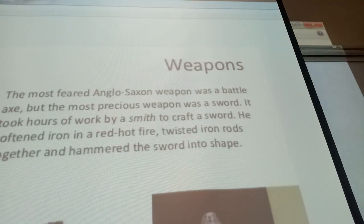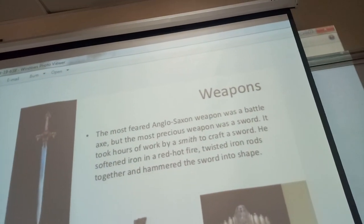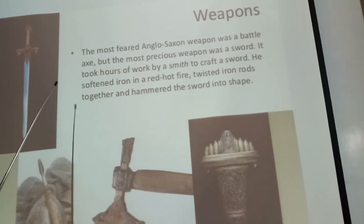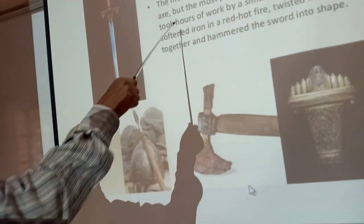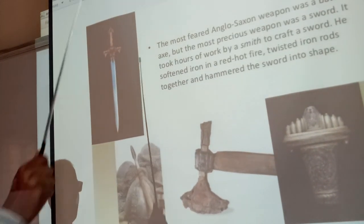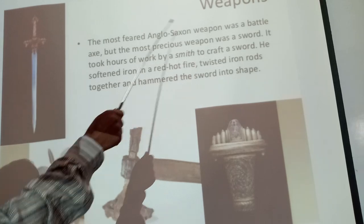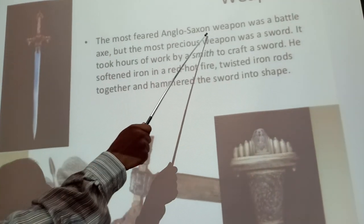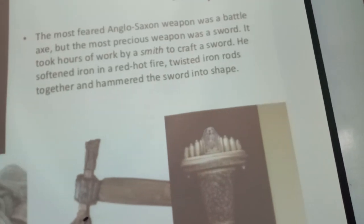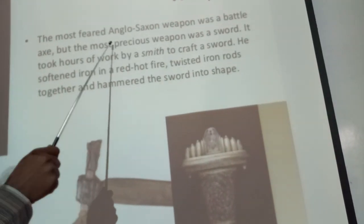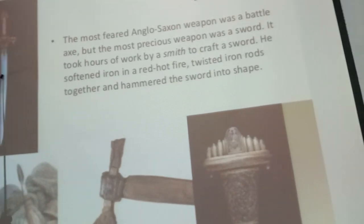Weapons: now let's look at the weapons the Anglo-Saxon people used. Here you can see a picture of a sword. The most feared Anglo-Saxon weapon was a battle-axe. But the most precious weapon was the sword. Most of them were in awe of the sword.